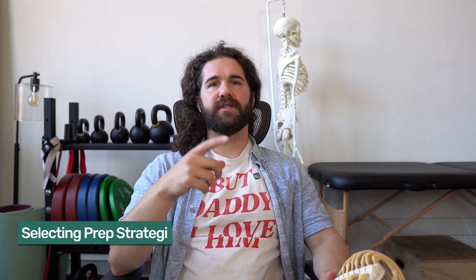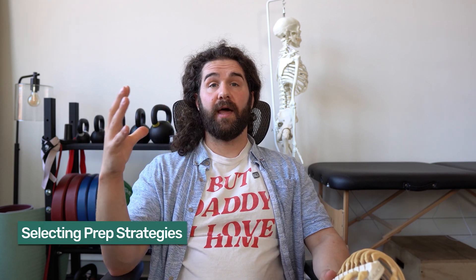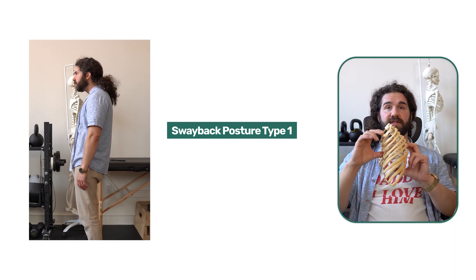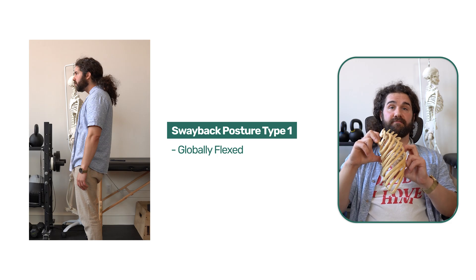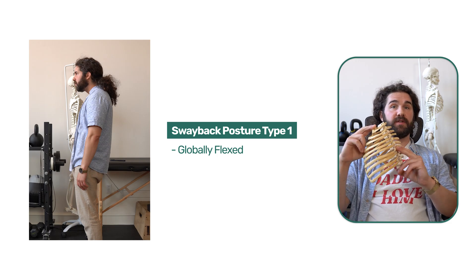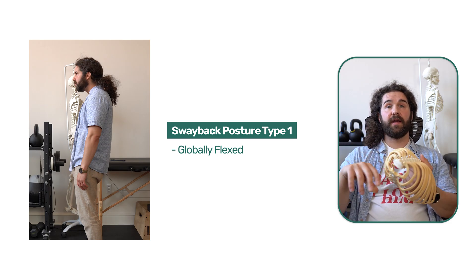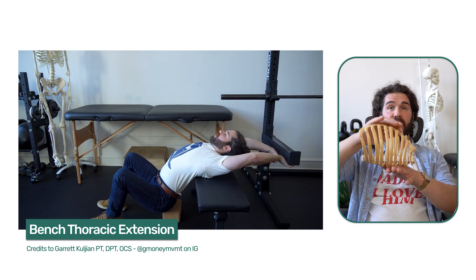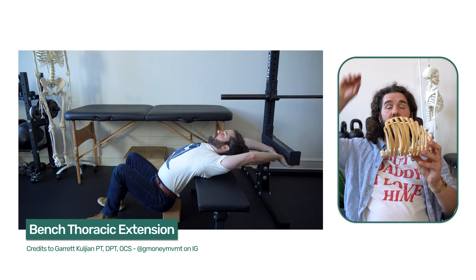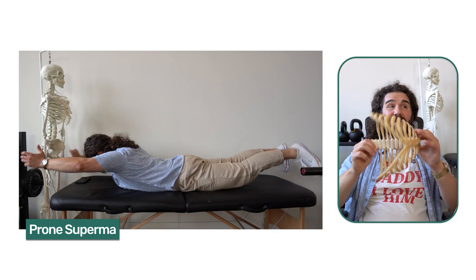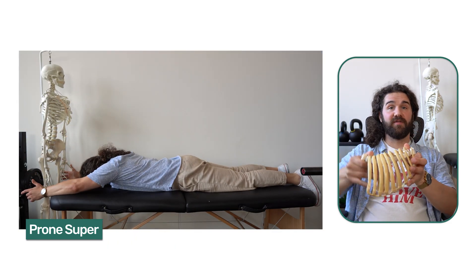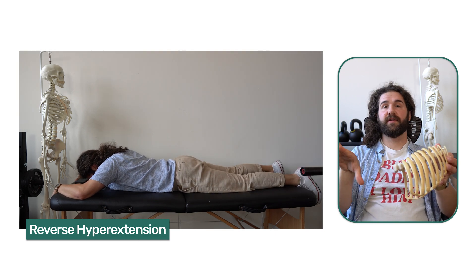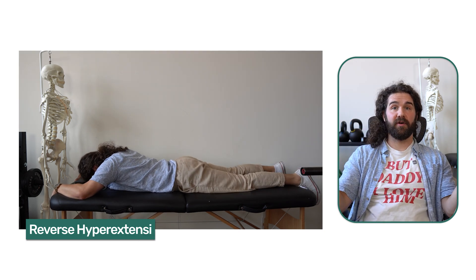Now let's get into prep strategies. For the person who presents more globally flexed, all we need to do is extend them. This is where something like a bench thoracic extension — thoracic spine on the bench, arms going back overhead — or something like a prone superman, or a reverse hyperextension: anything that gives global extension throughout the axial skeleton is going to work pretty well.